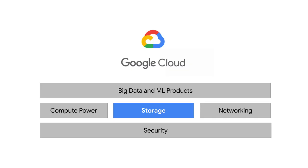This is one major way that cloud computing differs from desktop computing: compute and storage are independent. You don't want to think of disks attached to the compute instance as the limit of how much data you can process and store.